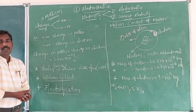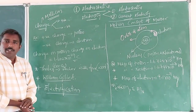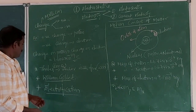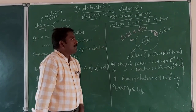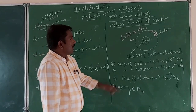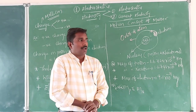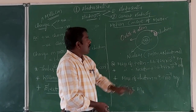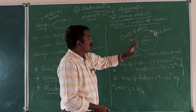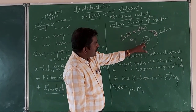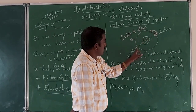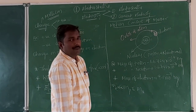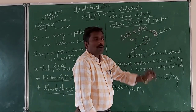Each and every atom is electrically neutral. Matter consists of molecules and each molecule consists of two or more atoms. The atom consists of a positively charged nucleus at its center, and electrons revolve in orbits around it. Electrons revolve around the nucleus in particular orbits due to the electrostatic force between them.